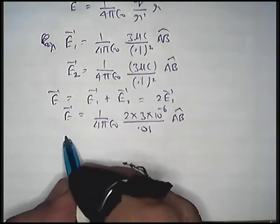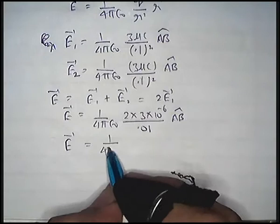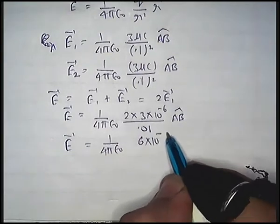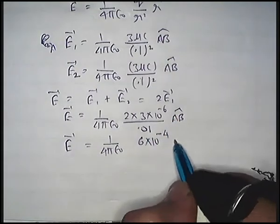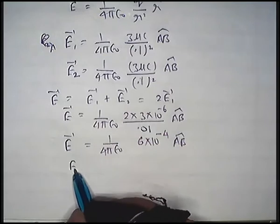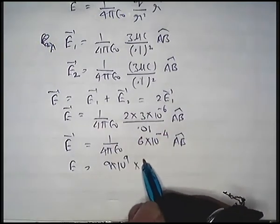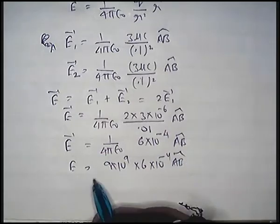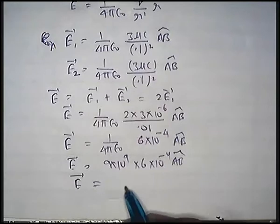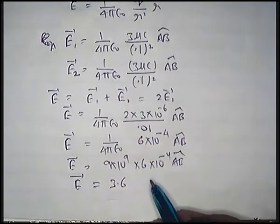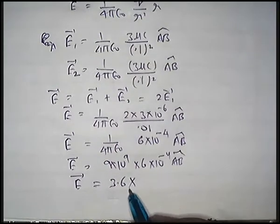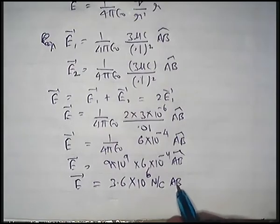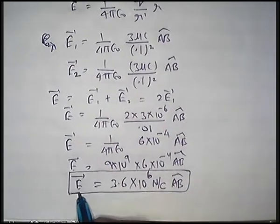So E vector equals 9 into 10 to the power 9 into 6 into 10 to the power minus 6 divided by 0.01 along AB cap, which gives E vector equals 5.4 into 10 to the power 6 N per Coulomb along AB. This is the net electric field at point O.